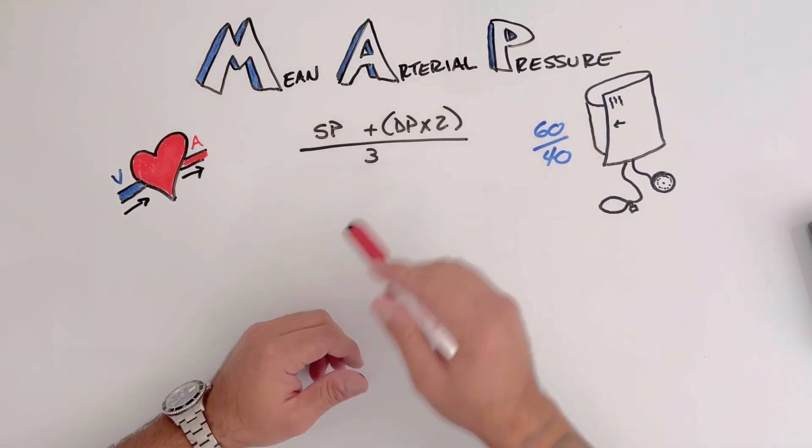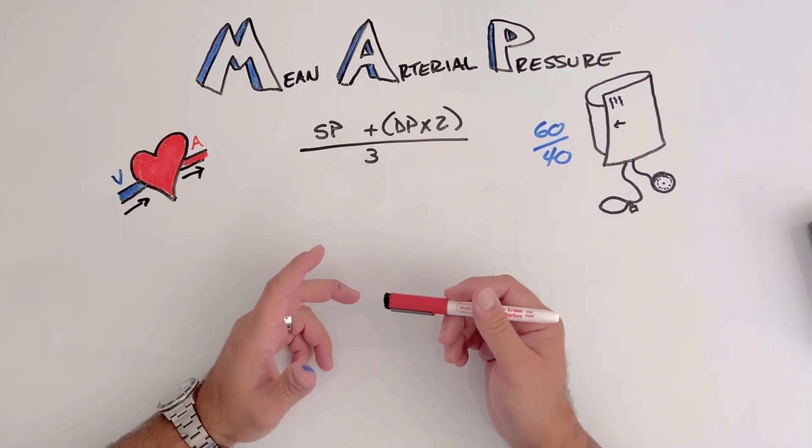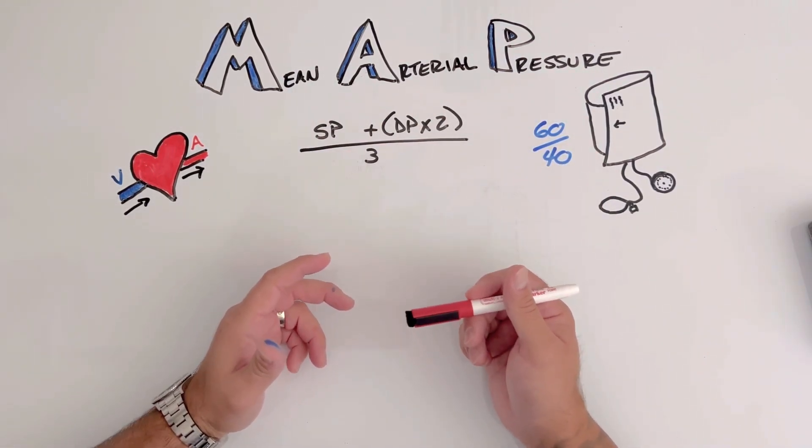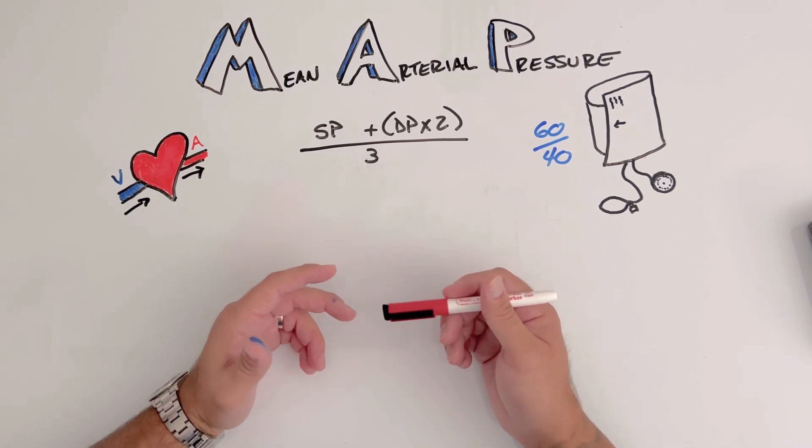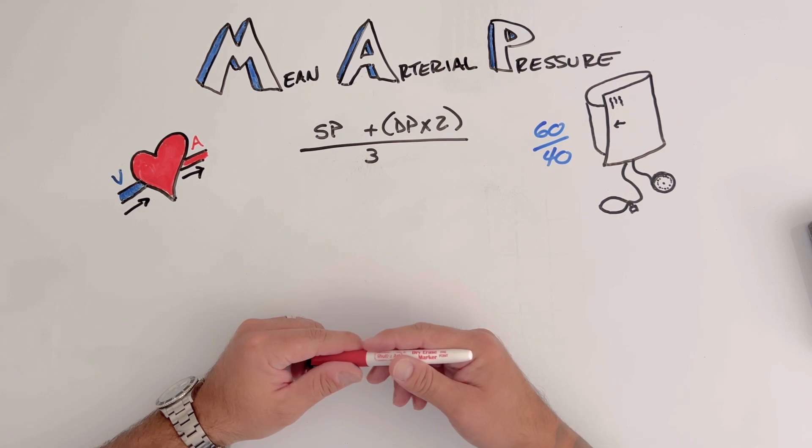Welcome back, Titans. Today we are talking about mean arterial pressure. What does it mean? How can we find it? And how is it going to better help us be clinicians and take care of our patients, making sure that our patient is adequately perfusing.